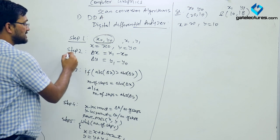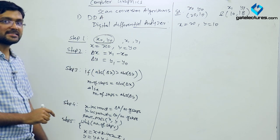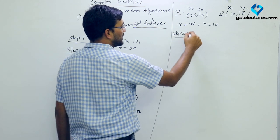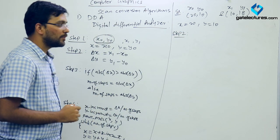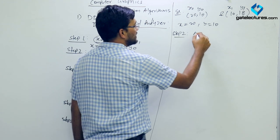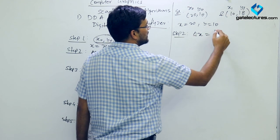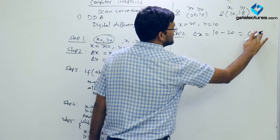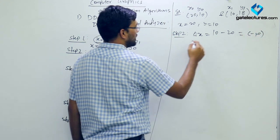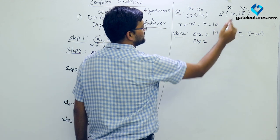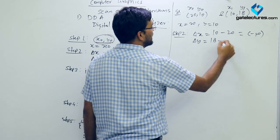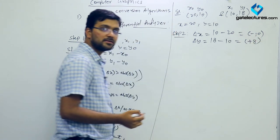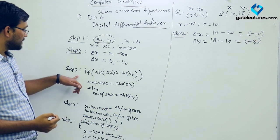Step 2 is to calculate DX and DY. Our DX = 10 − 20 = −10, and our DY = 18 − 10 = +8.